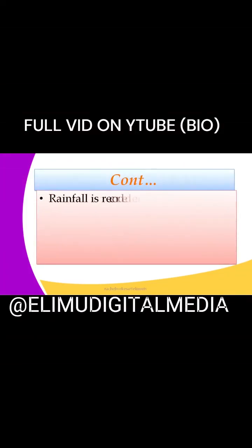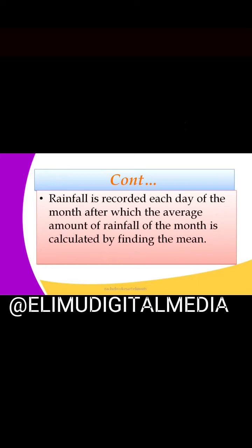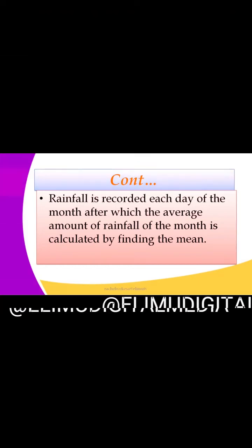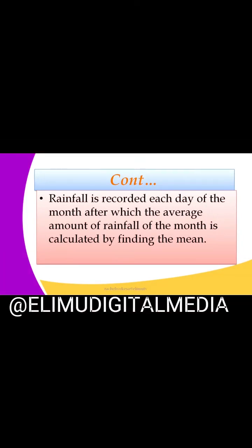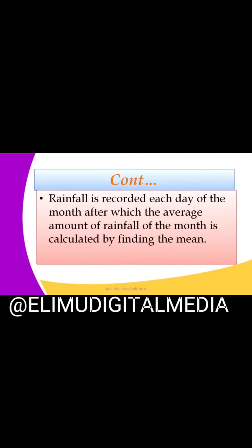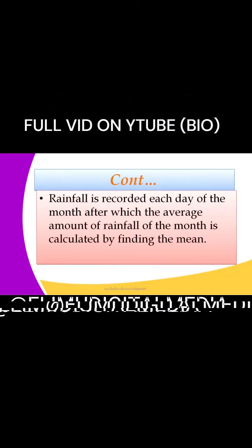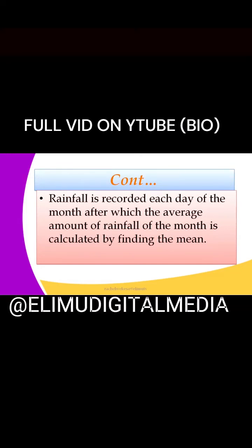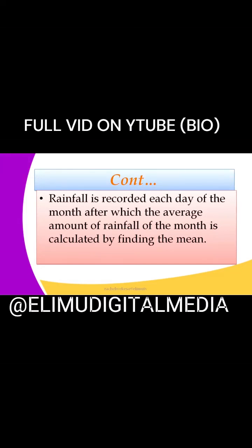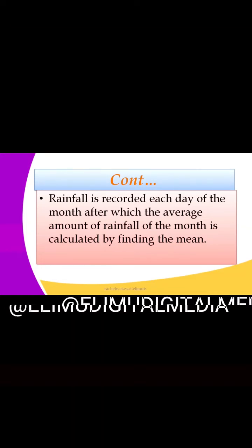Rainfall is recorded each day of the month, after which we get the average amount of rainfall for that month. That is calculated by finding the mean. So if you want to get the average rainfall for a whole month, you record the rainfall collected each and every day of that month, then divide it by the number of days of that month. That is how you get the average amount of rainfall in a month.